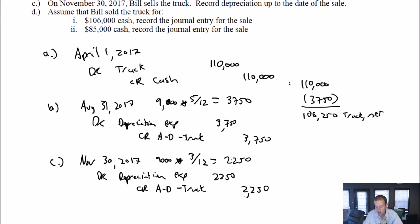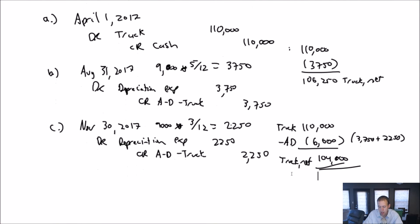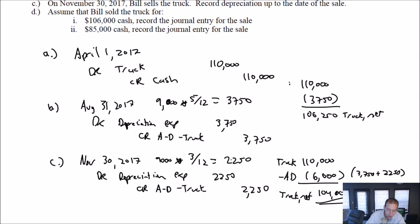What's my truck's net book value on the date of the sale? The truck's cost was $110,000. The amount of depreciation so far has been $3,750 and $2,250, which is $6,000 total accumulated depreciation. Truck minus accumulated depreciation equals truck net. Our truck's net book value is $104,000. So far up to here, nothing really new, just a couple of partial year amortization entries. Now something new.